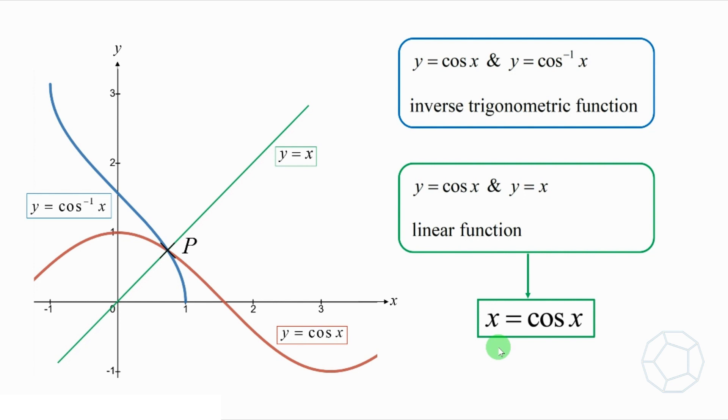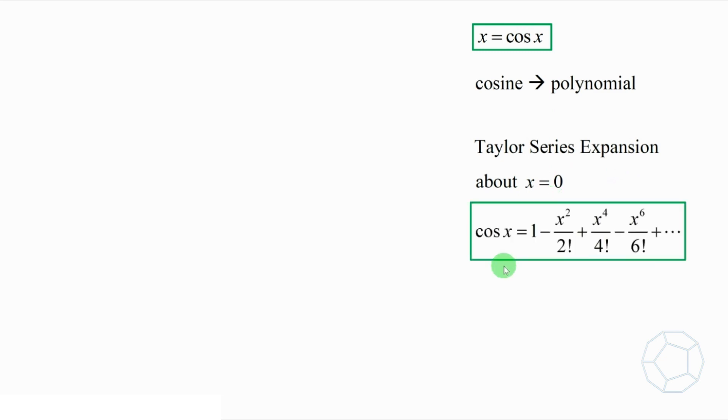But still, there seems to be no direct way to solve this equation. If we can change the cosine function into a polynomial, then it would be great. How can we do that? Let's look at the Taylor series expansion of cosine x about x equals to 0.